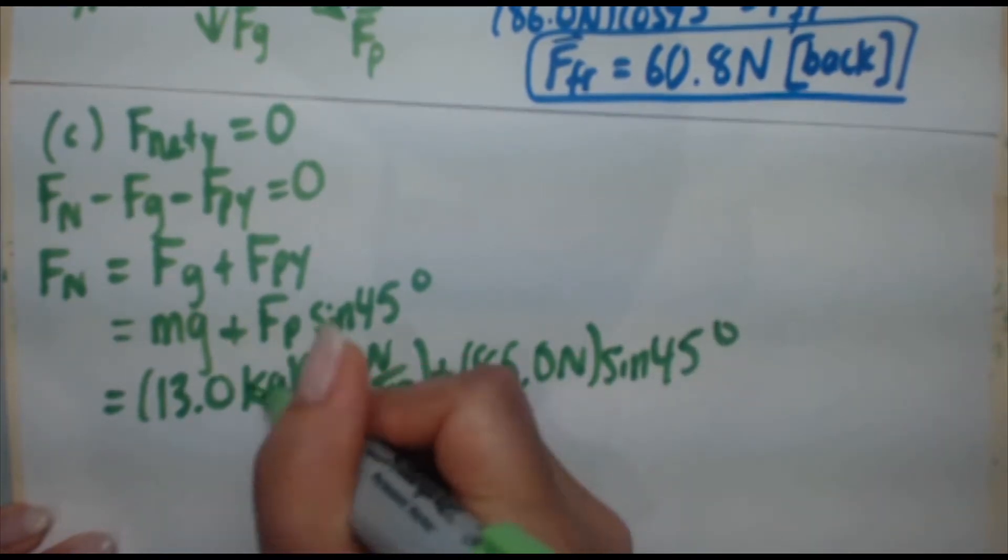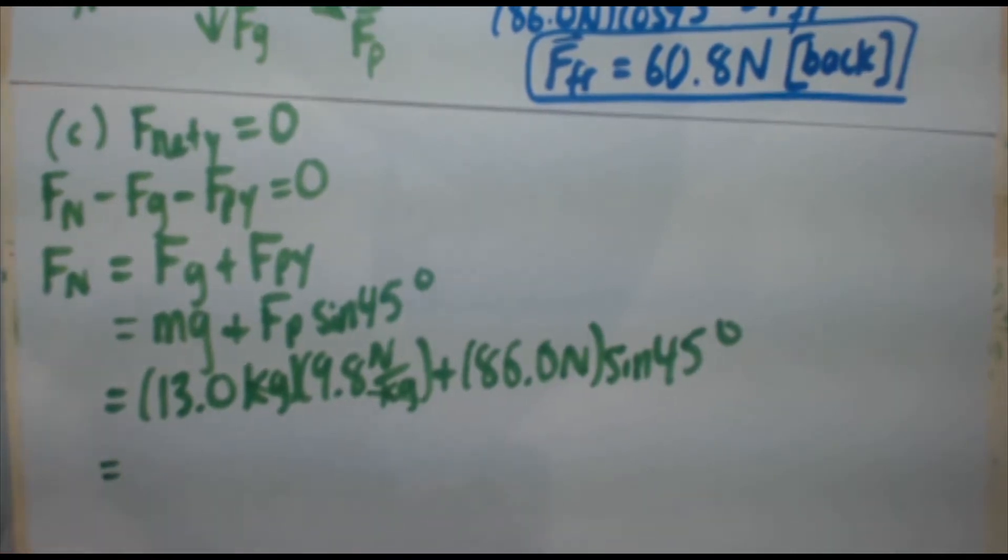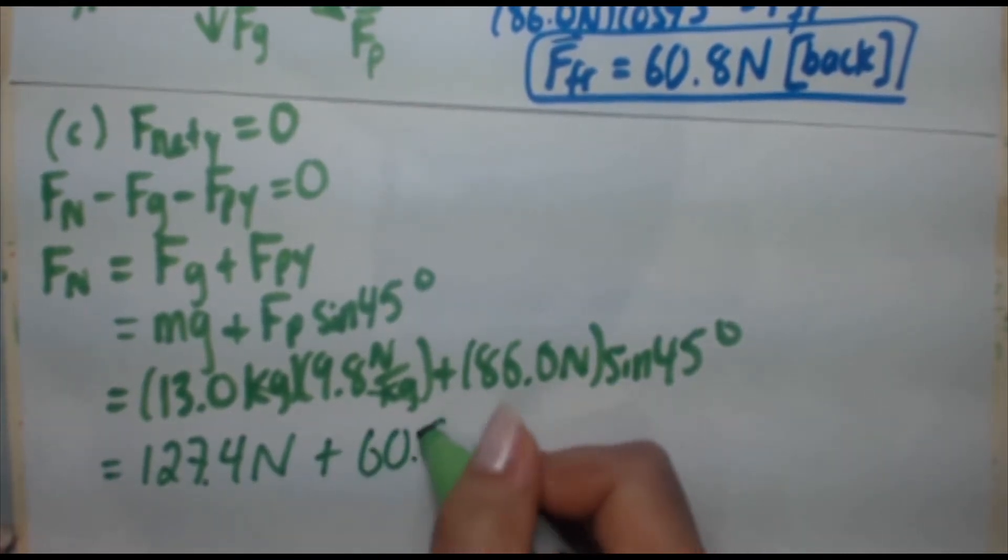Okay, so our kilograms cancel there. We're going to be left with newtons, newtons and newtons. That's what we want. Okay, so the first expression comes out to 127.4 newtons. The second part comes out to 60.8 newtons.